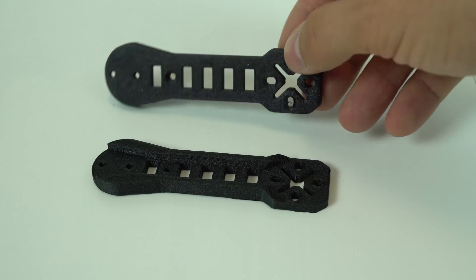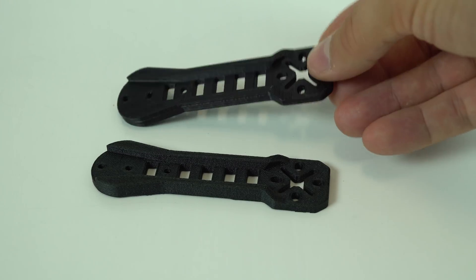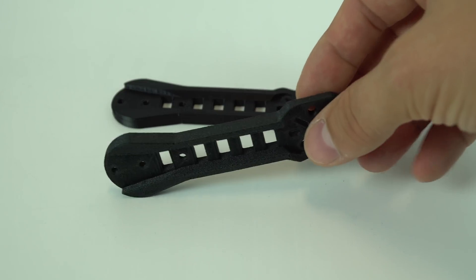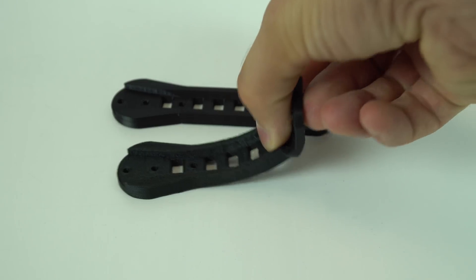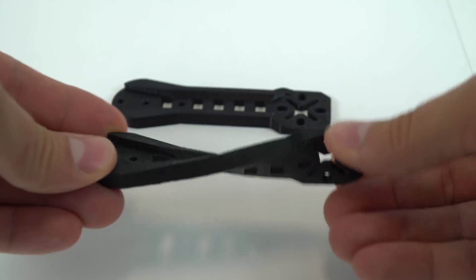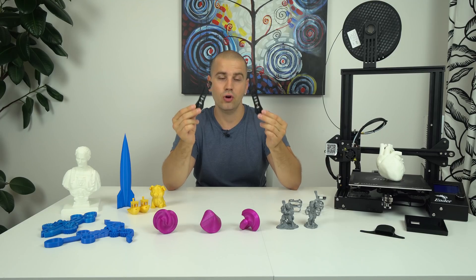Here are my quick tests, printing with ABS and TPU filaments. These are arms for mini quadcopter designed by Tach2, very good results, no warping with ABS and as well with flexible filament. I have no complaints.